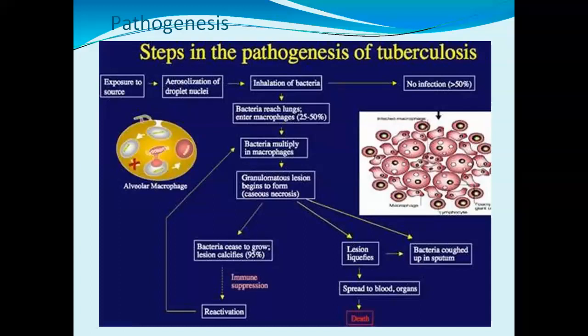Mycobacterium tuberculosis has the important property of being able to multiply inside macrophages. Normally, macrophages engulf and degrade pathogens through phagocytosis, but these bacteria cannot be killed by macrophages. Instead, they dominate the macrophages and multiply there. Granulomatous lesions then begin to form, leading to necrosis or tissue damage, which causes the bacteria to cease growing. The lesions then calcify.